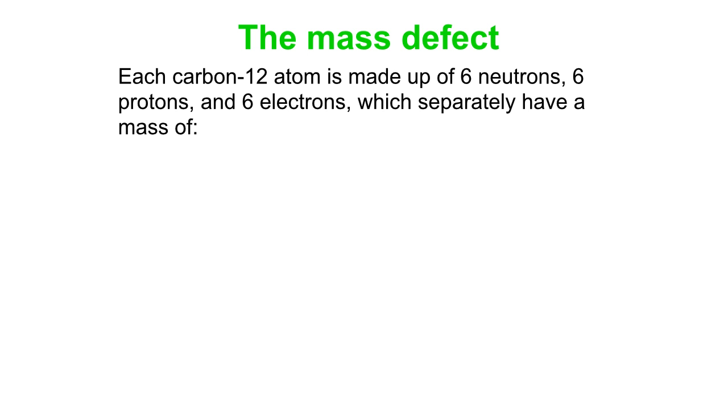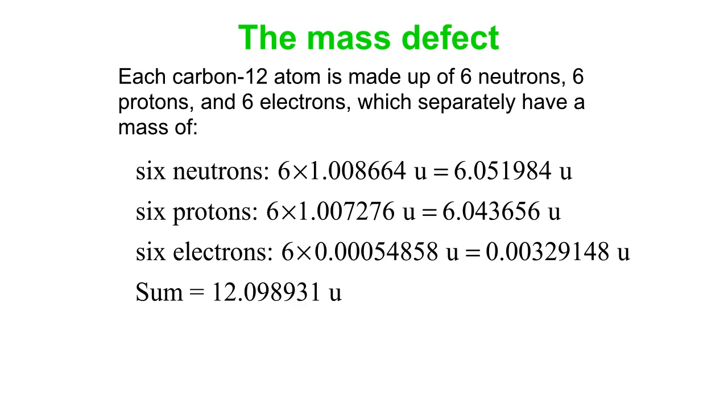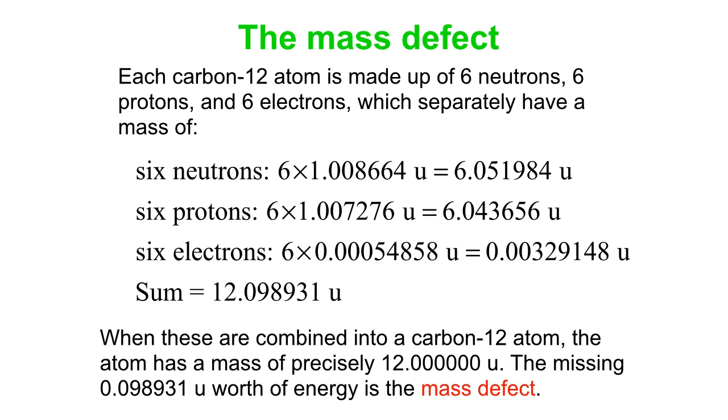Let's do that. Take six neutrons, six protons, six electrons, add them up, and you get 12.098931 U. That's what they individually add up to. But when you combine them into a carbon-12 atom, the atom has a mass of precisely 12.000000 U. There's this missing little bit of mass that we know as the mass defect.